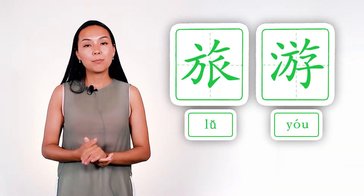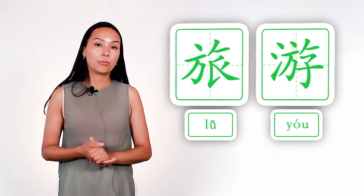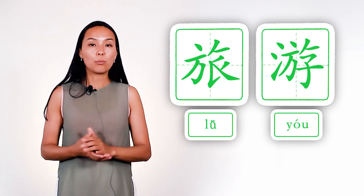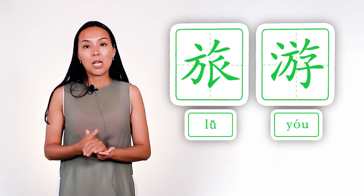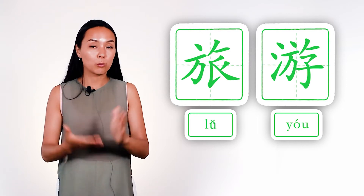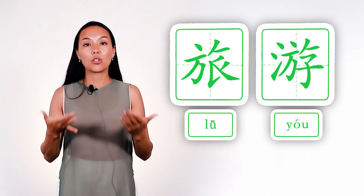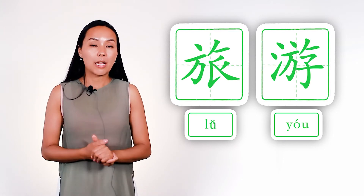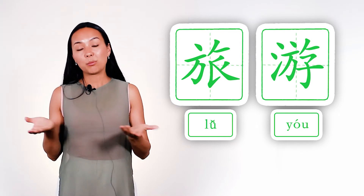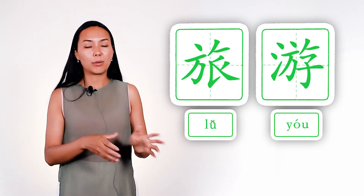The next example has two characters, they both have radical square: lü and yow — to travel. Lü means to travel, yow means to swim. So together, they mean travel, to travel. Why do we have 'swim' here? Because still, when we travel nowadays, we use ships. Both these characters have our radical square, and it symbolizes a place. So when we travel, we go from one place to another place.